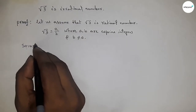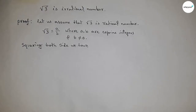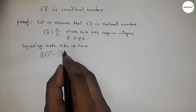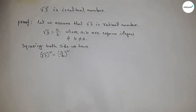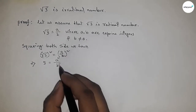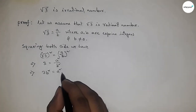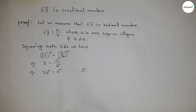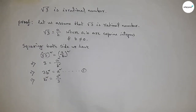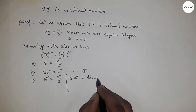Now squaring both sides of root 3 equal to a by b: root 3 whole square equals a by b whole square. This gives us 3 equals a squared by b squared. Cross-multiplying, we get 3b squared equal to a squared. We can also write b squared equal to a squared by 3.